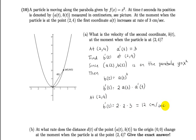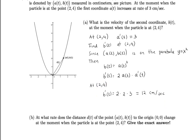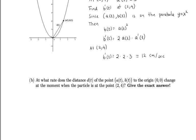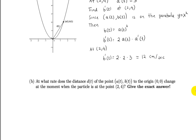That's the answer for the rate of b at (2,4). Now let's look at the second part of the problem. In this problem, we are interested in finding the rate of the distance between the point (a(t), b(t)) to the origin. First we need to set up the distance function.